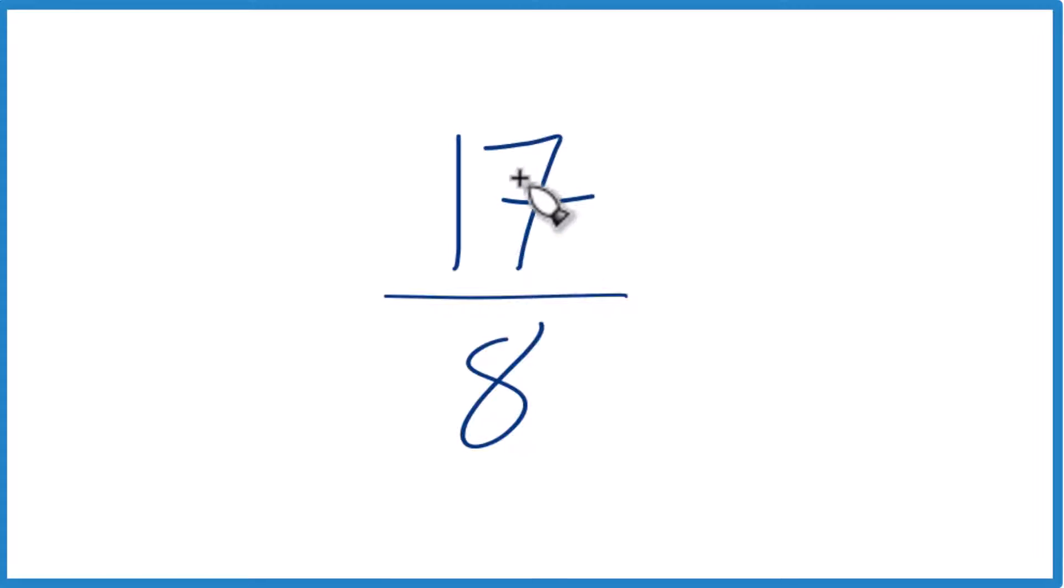So we have this improper fraction here, 17 eighths, and we want to get it to a mixed number. So let's do that. It's an improper fraction because 17 is larger than 8, so that means we can change it to a mixed number.